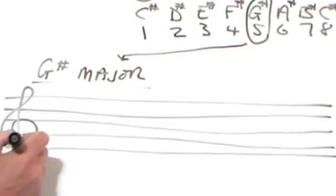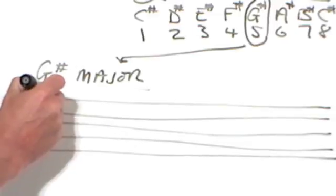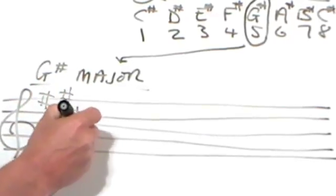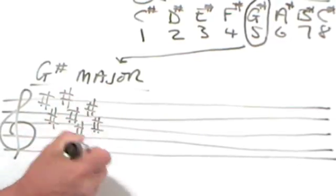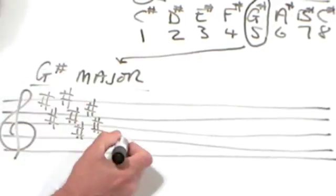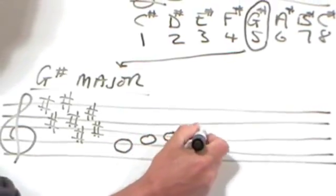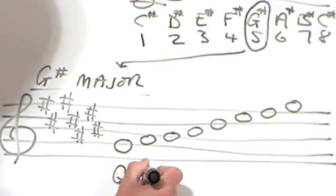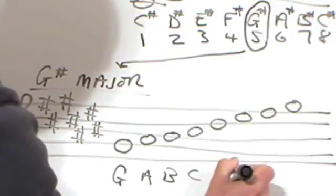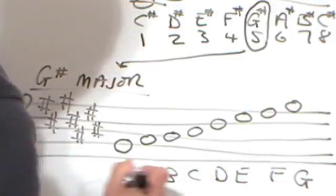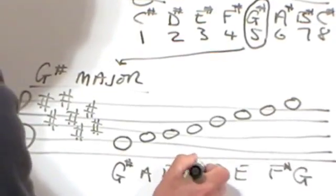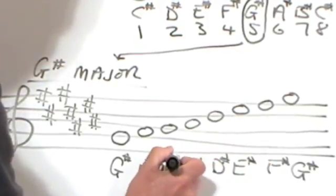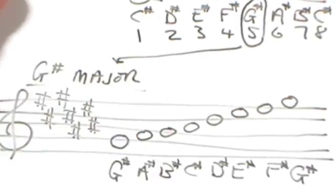Staff, treble clef, and I'll put this key signature in to get us going. Father Charles goes down and enters battle. Now I'll put the notes in but starting on G or G sharp: A, B, C, D, E, F, G. Letter names. Key signature: Father Charles goes down and enters battle. So that at the moment is still this key signature from C sharp.